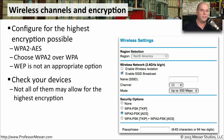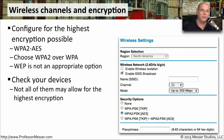One consideration with setting the encryption type is that all of the devices that need to connect to this wireless network should be using this encryption type. If you have some older equipment that doesn't understand WPA2, those devices would not be able to connect to the wireless network. You could change your wireless network encryption to use WPA instead, but it's usually best to upgrade those older devices so that everything on your network will be using WPA2 encryption.